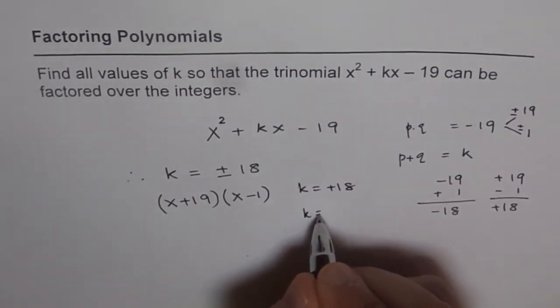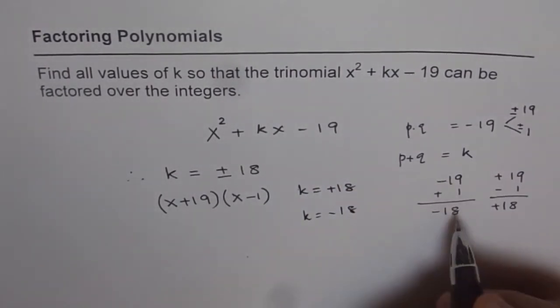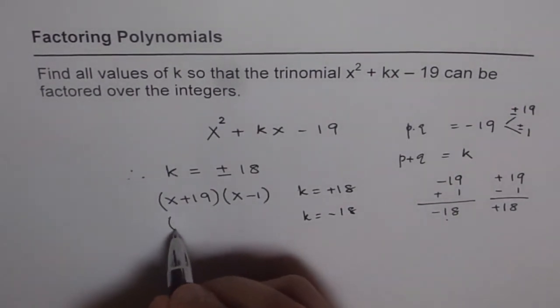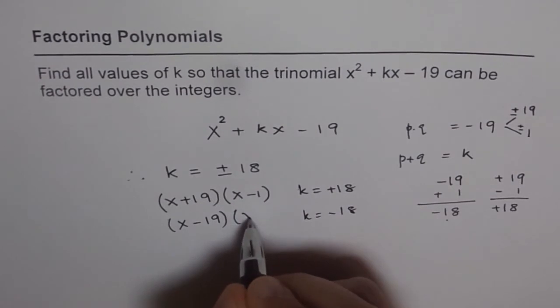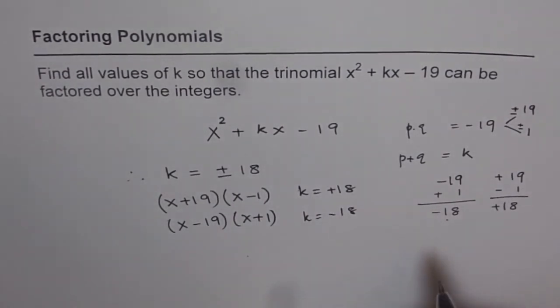And if k equals to minus 18, in that case, our factor will be x minus 19 times x plus 1. So, these are the only two possibilities. That is our answer. Thank you.